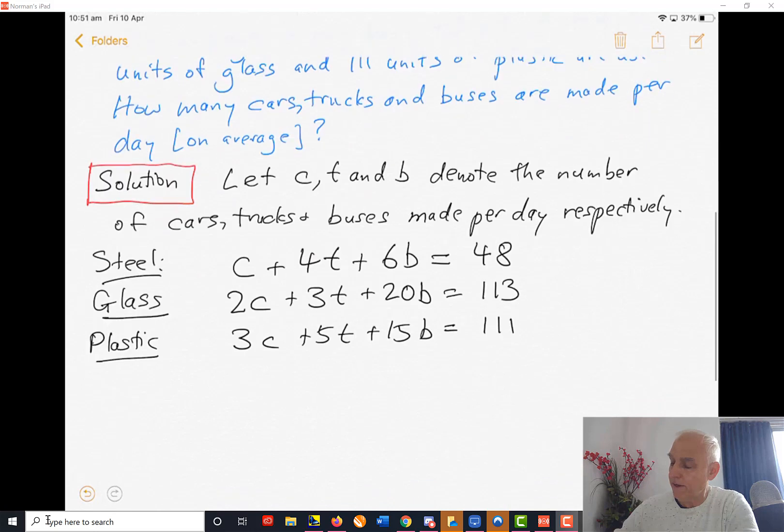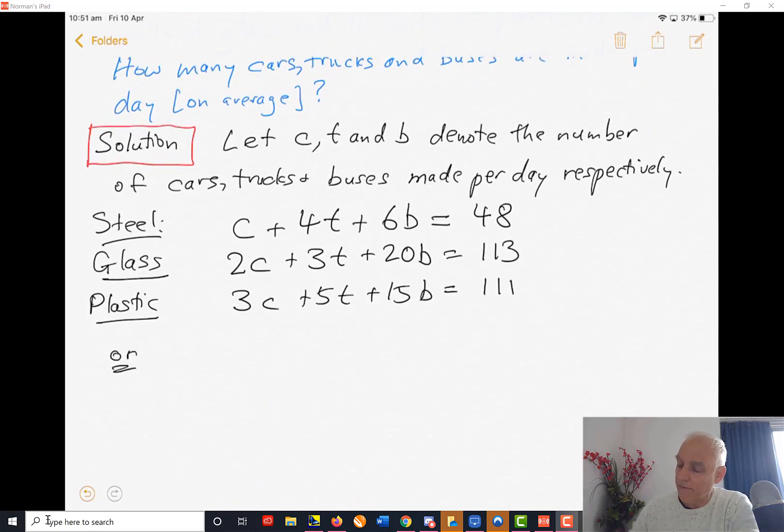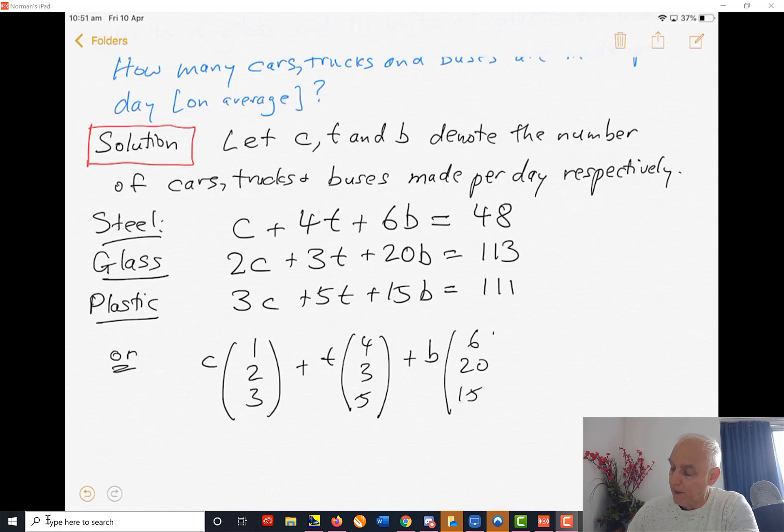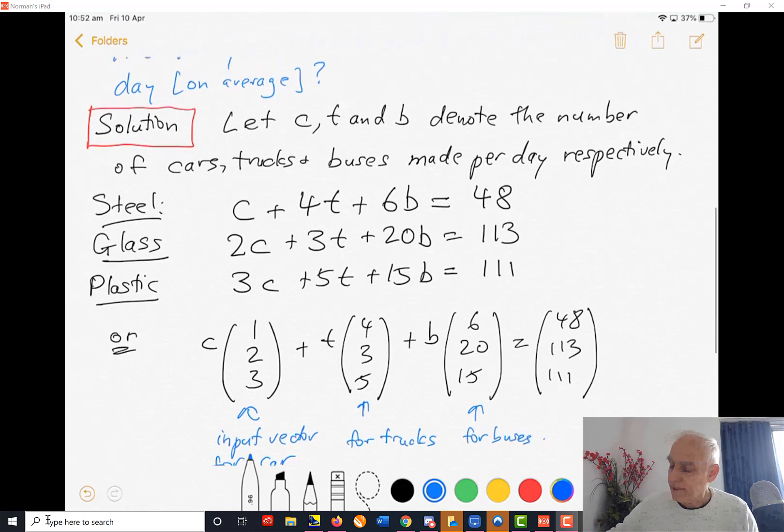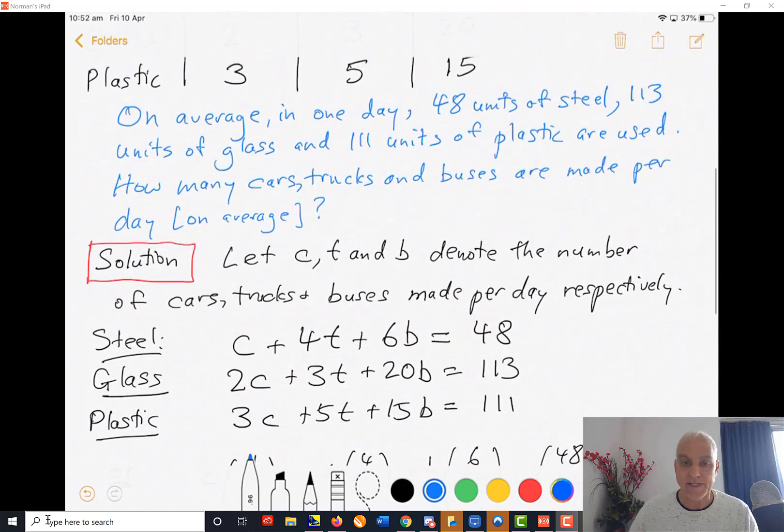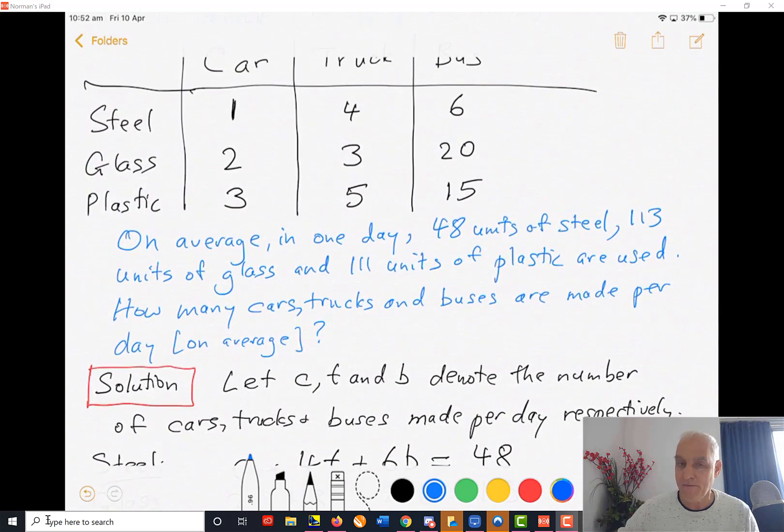Note that we could write these equations alternatively as C times the vector (1, 2, 3) plus T times the vector (4, 3, 5) plus B times the vector (6, 20, 15) equals the vector (48, 113, 111). Each of these vectors corresponds to the inputs needed to produce a given vehicle. This is the input vector for cars, this for trucks, and this for buses. These vectors are just the various columns that we see in the original matrix.